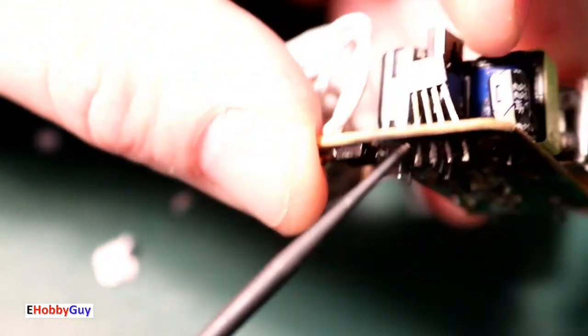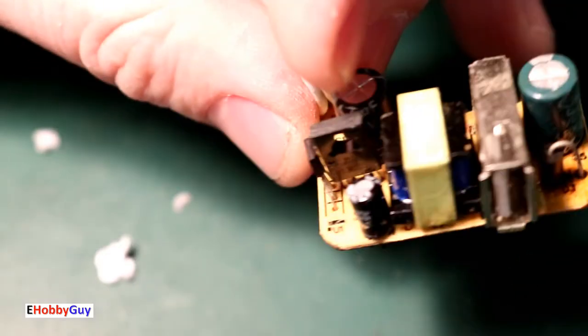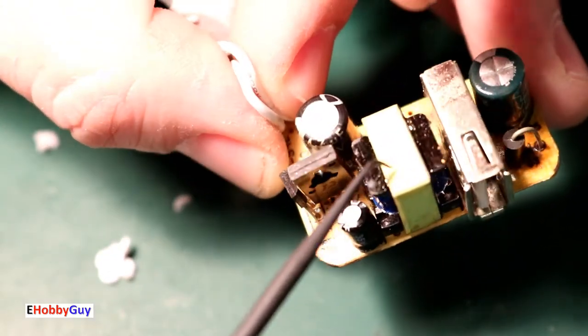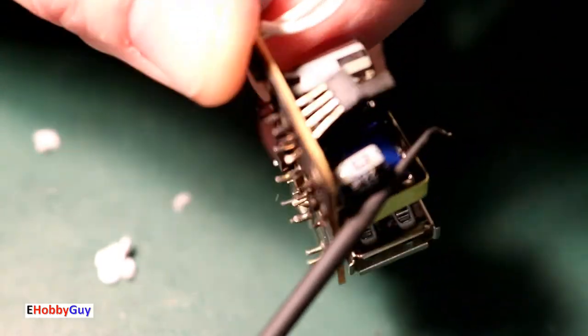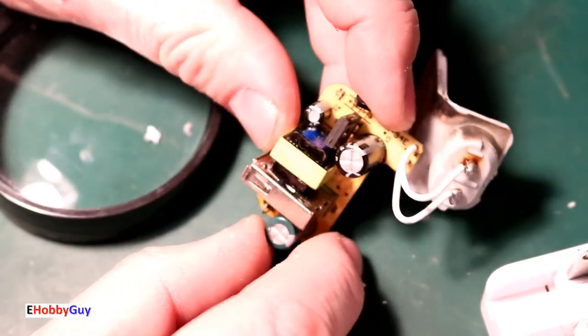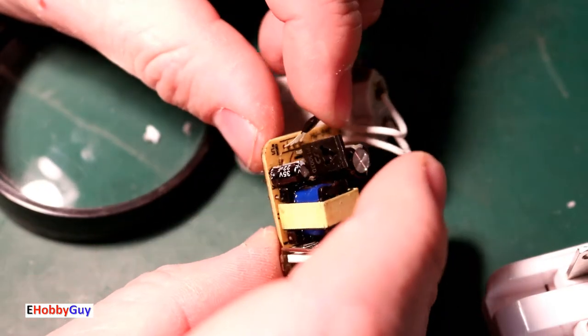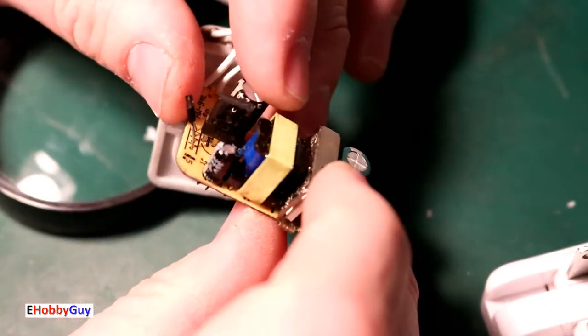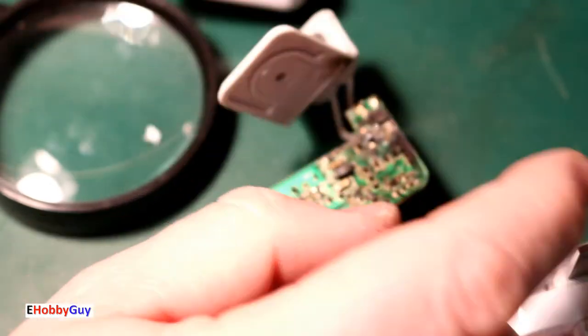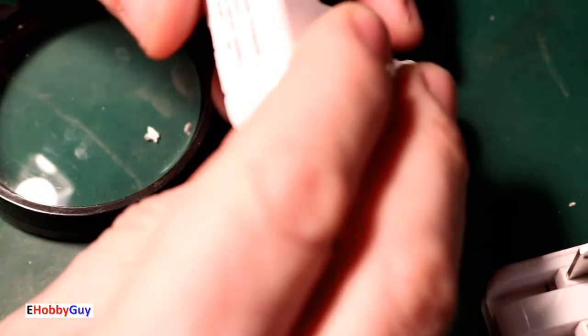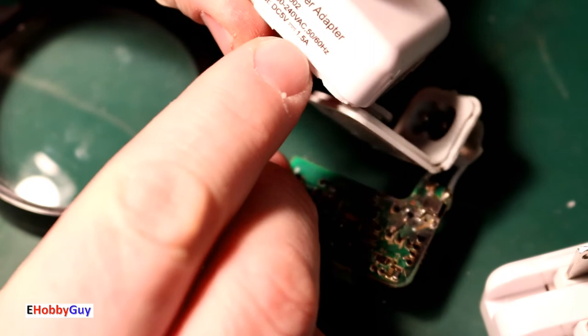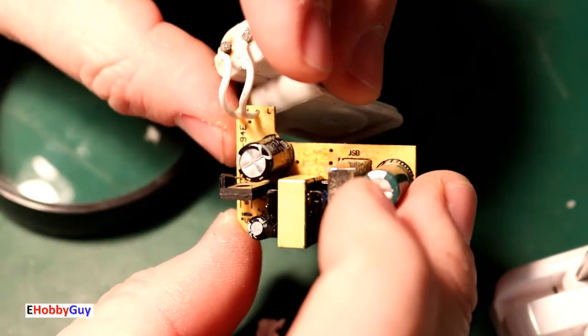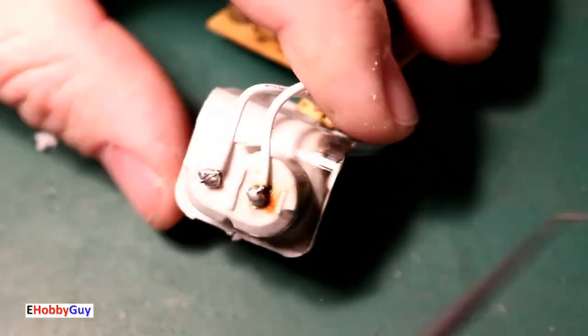MOSFET looks like a triac here. I was suspecting that the transformer itself was the component that failed, but it doesn't look like it. Yes, this transistor, it is a transistor and it's an NPN with a power dissipation of 25 watts and a two amp power load, which is exactly what this was rated for.